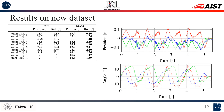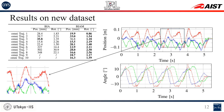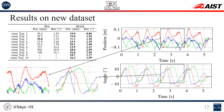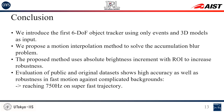The pose variations show small differences between the estimated pose and the ground truth, although the translation parameters are sometimes shaky. To conclude, we introduced the first six degrees of freedom object tracker using only events and 3D models as input. We propose a motion interpolation method to solve the accumulation blur problem, and use absolute events in the region of interest to increase robustness. We evaluate our method on public and new datasets, showing high accuracy and robustness in fast motion against complicated backgrounds.